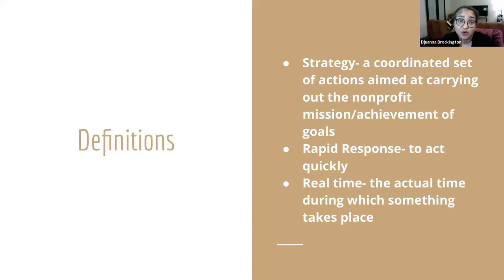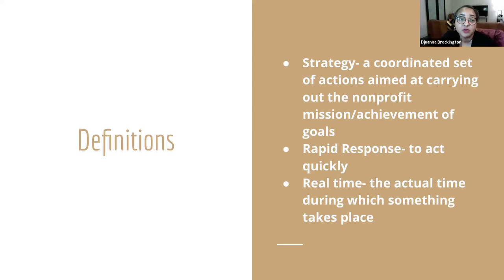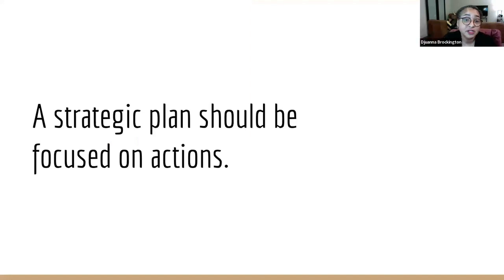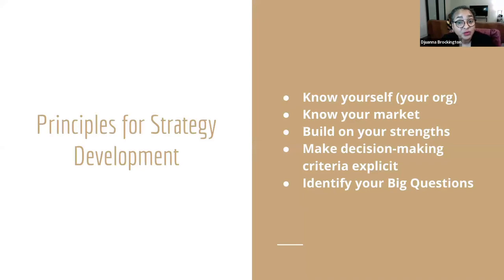Rapid response simply means to act quickly, and real time is the actual time during which an event is taking place. These meanings are important so that everyone understands what we're talking about. This is not your three-to-five-year strategic plan. When COVID happened, we couldn't think three to five years down — we had to think six months, three months, then a year out. A strategic plan should be focused on actions. Strategy and action cannot be disconnected — if they're not connected, you don't have strategy.